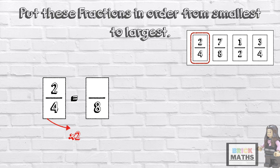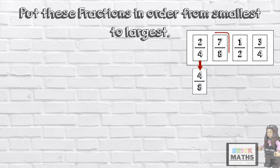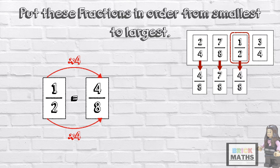So 4 times 2 is 8, and 2 times 2 is 4, so 2 quarters is equivalent to 4 eighths. The next fraction already has 8 as its denominator, so we don't need to find an equivalent fraction. So the next fraction is 1 half. 2 times 4 equals 8, and 1 times 4 equals 4, so 1 half is equal to 4 eighths.